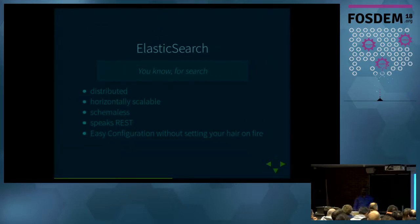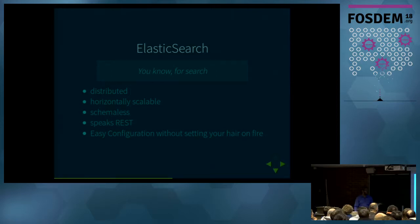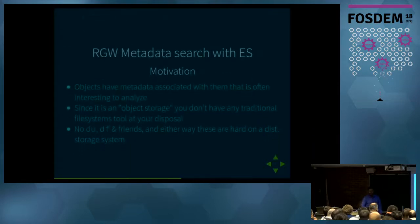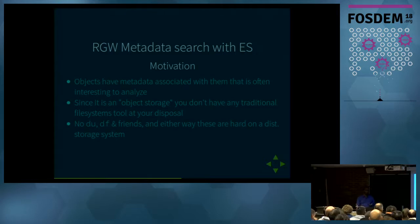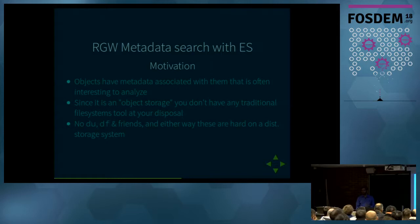Elasticsearch, as Denis already explained, is a distributed, horizontally scalable document search engine built on Apache Lucene. It speaks RESTful API and literally every configuration is done via REST, so it's pretty easy. The motivation behind building metadata search for Rados Gateway objects with Elasticsearch is that you already have a lot of metadata associated with your objects. For example, if you're doing video analysis, you may have a tag saying this video is uploaded by a certain author, and you might want to query how many videos were uploaded by someone, with what average sizes. Since it's object storage, you don't have traditional file system analysis tools at your disposal.